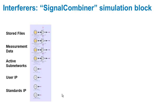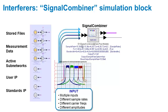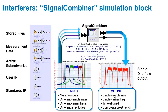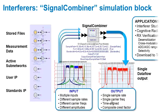In addition, many systems today are interference limited instead of noise limited. It's possible to combine many different signal sources into one simulation in order to do interference studies, and each of these can be scripted and swept. If I have stored waveform files, active SystemVue subnetworks, my own intellectual property, or a standards reference, I can combine those separate signals using a new component in SystemVue called the signal combiner into a single coherent data stream that is time-aligned with a common sample rate. This is used for interference studies, cognitive radio, receiver verification, and collecting signals for download to test equipment.